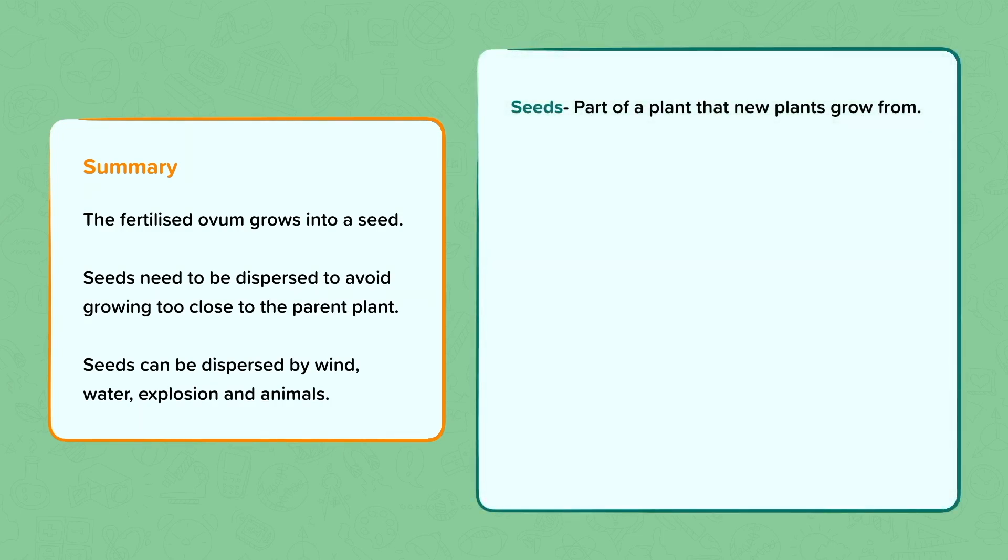The key words we used were seeds, which is the part of the plant that grows into a new plant. Life cycle: the changes that happen as an organism or living thing gets older. Disperse, which means to spread out.